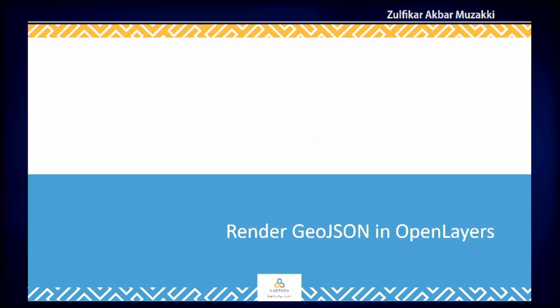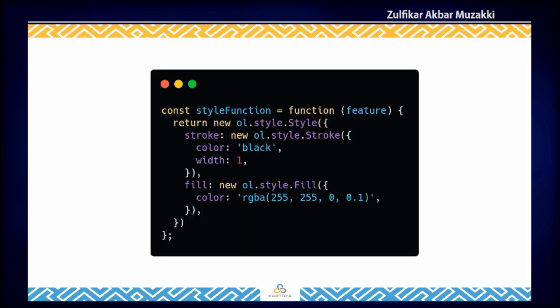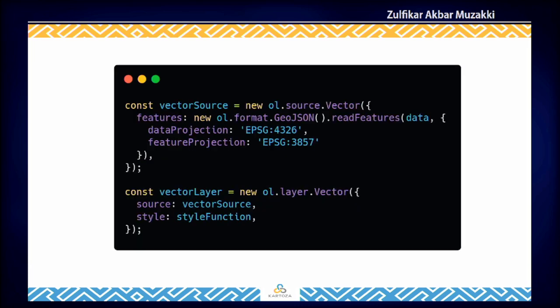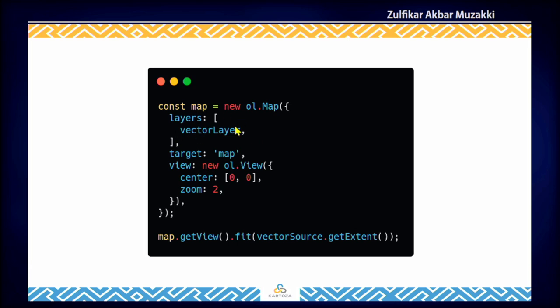So how can we render GeoJSON in OpenLayers? First we define the style — here I define the stroke, which is the outline of the GeoJSON, and then the fill. Then we define the vector source, because GeoJSON is a vector format. We also provide the data projection and the feature projection when we read the GeoJSON data. Then we add the source and the style function to the vector layer. Finally, we render it to the map, which is the OpenLayers map itself.